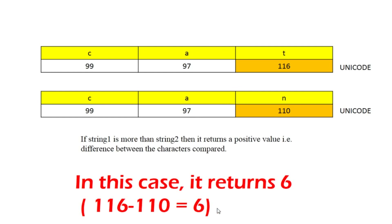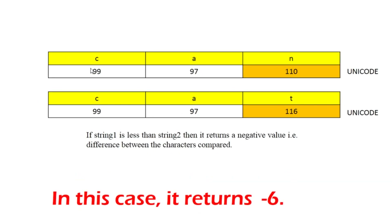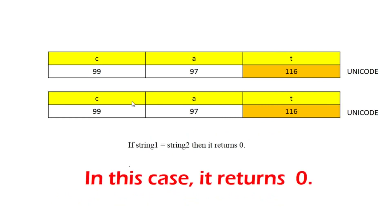For the second possibility, the first string is 'can' and the second string is 'cat'. At the differing position, 'n' has Unicode 110 and 't' has Unicode 116. The first string is less than the second, so it returns a negative value: 110 minus 116 equals minus 6. And if both strings are equal, the function returns zero.